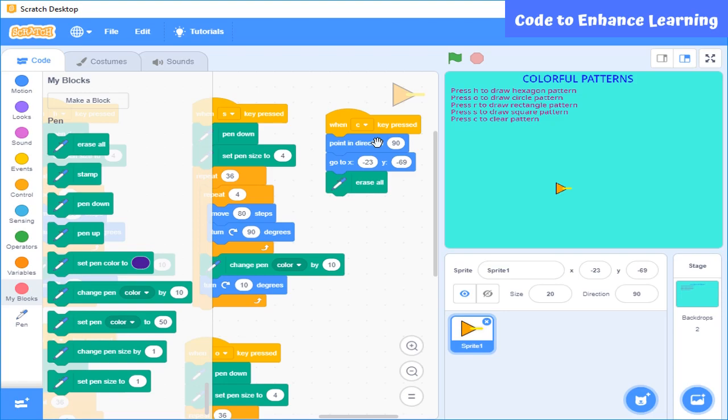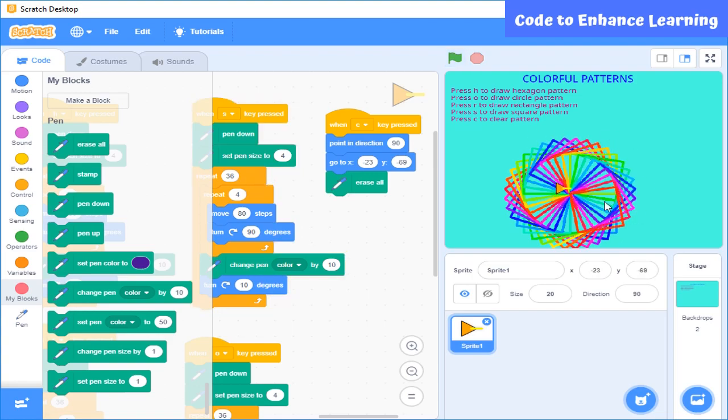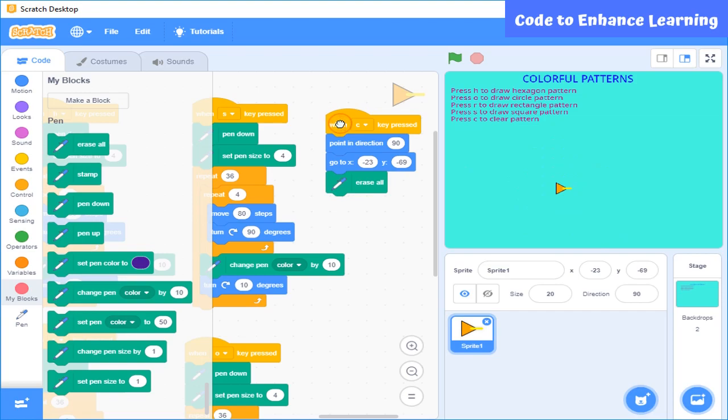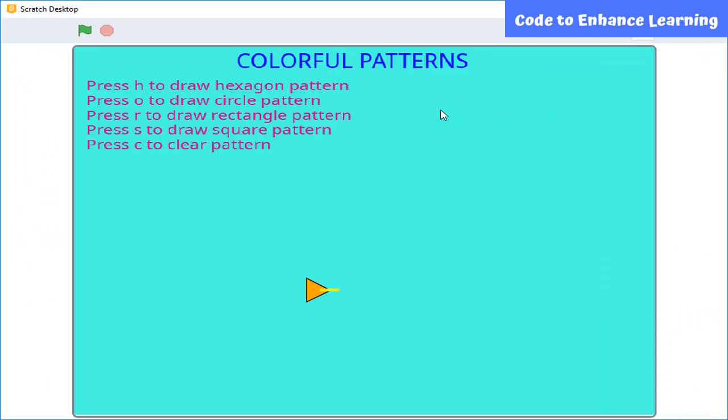Let's see how it works. First, let's draw a square pattern. Now to clear this, let's press C. So what do you think how this code will run? Let's see. Now I am going to press H to see what will happen.